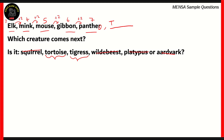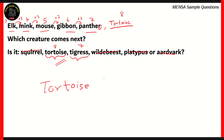Since the number of letters in each word is increasing, the next word has to have eight letters. Tigress has seven letters, but tortoise has eight letters — T-O-R-T-O-I-S-E. So tortoise has a total of eight letters, meaning the right answer is tortoise. That concludes the first question.